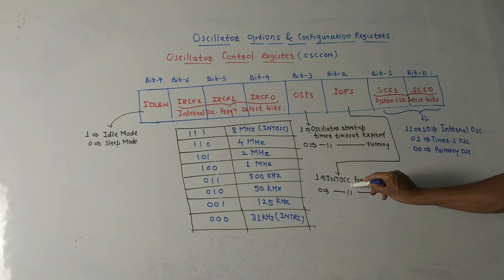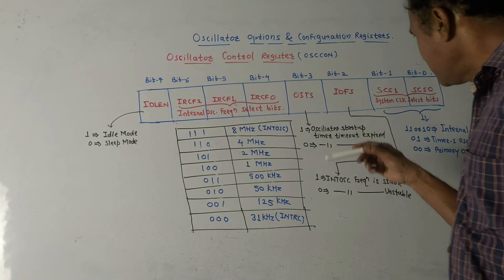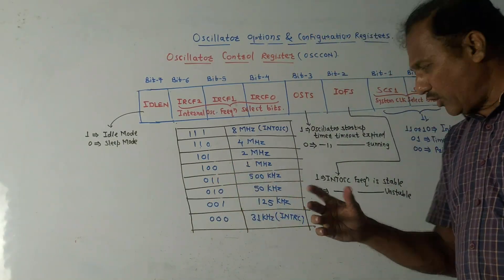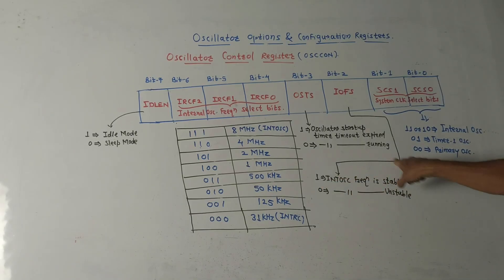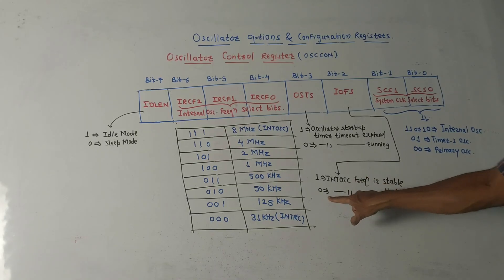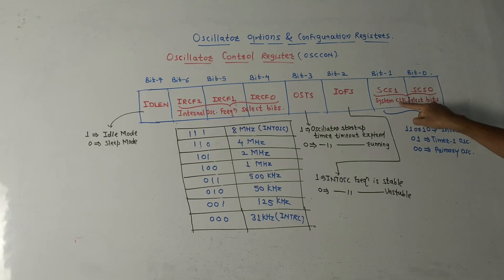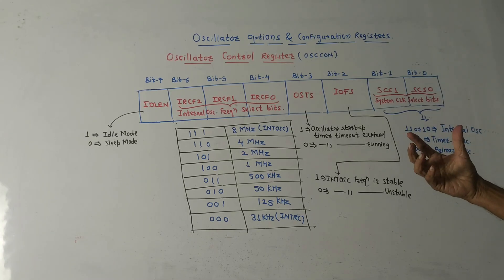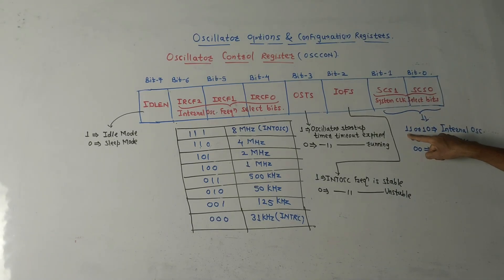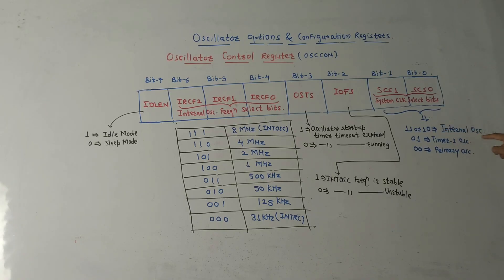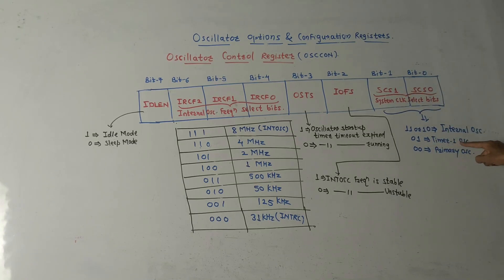Bit number 2 is IOFS. If this bit is 1, the internal oscillator frequency is stable. This bit gives the indication whether the oscillator frequency is stable or unstable: bit value 1 means frequency is stable, 0 means frequency is unstable. The last two bits — bit 1 and bit 0, written as SCS1 and SCS0 — are the system clock select bits. If the combination is 1-1 or 1-0, the internal oscillator clock is selected. If the combination is 0-1, timer 1 oscillator is selected. If the combination is 0-0, the primary oscillator is selected.